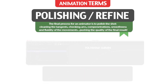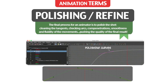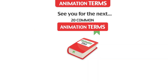Polishing and Refine: the final process for an animator is to polish and refine the shot — cleaning the tangents, checking arcs, compenetrations, smoothness and fluidity of the movements, and pushing the quality of the final result. That was all for this group; I will wait for you in the next one.